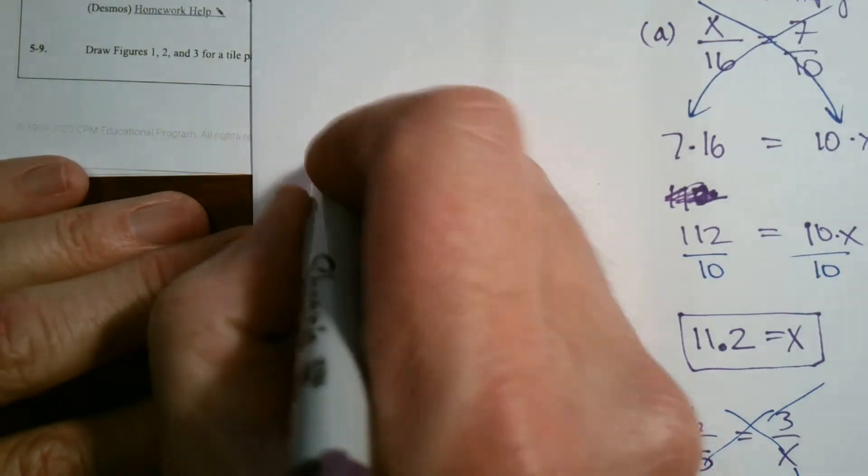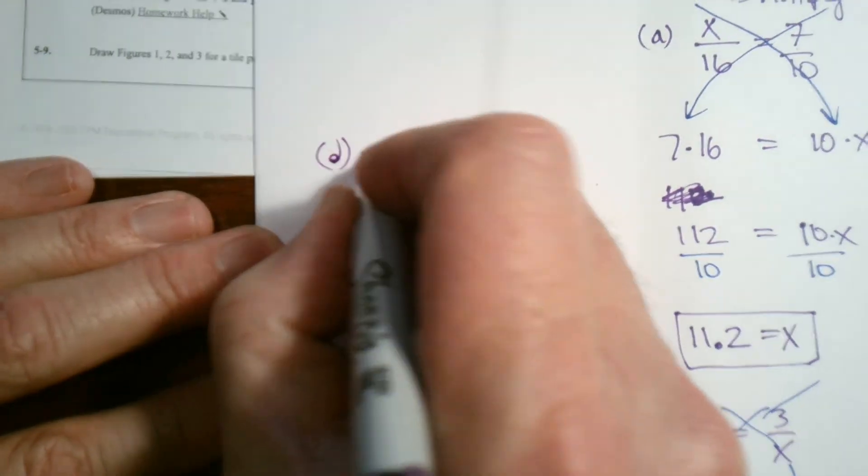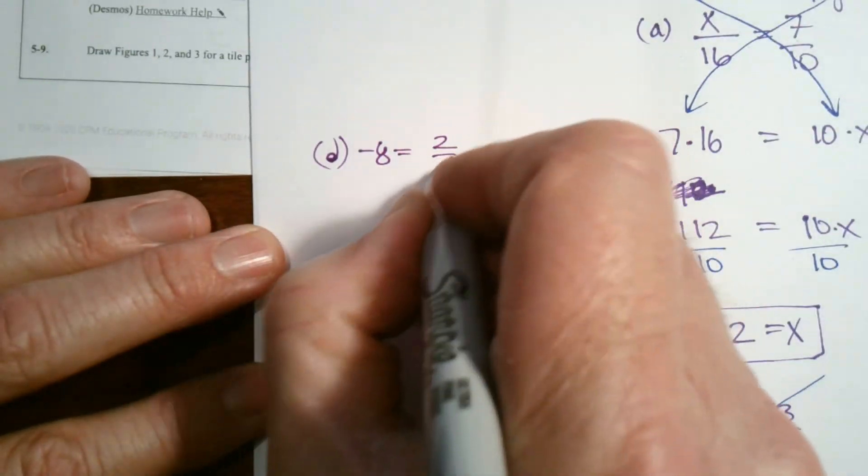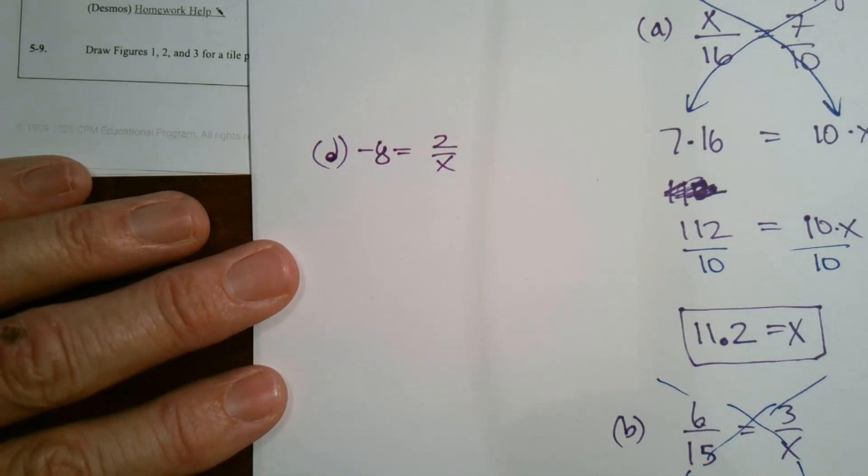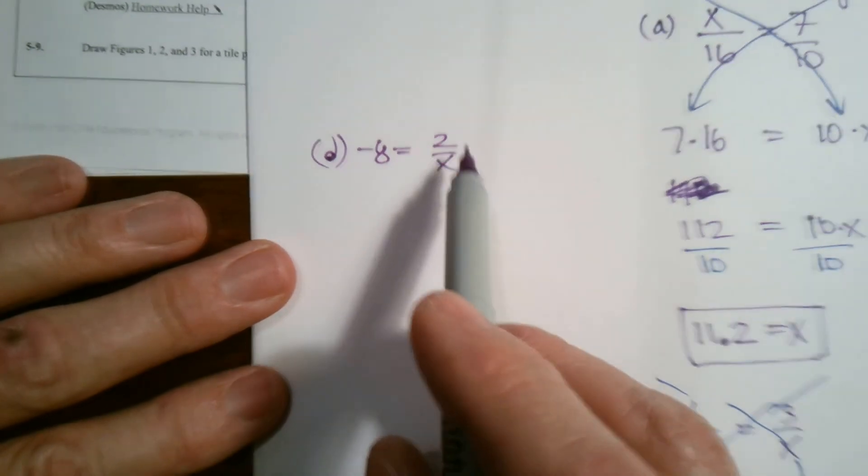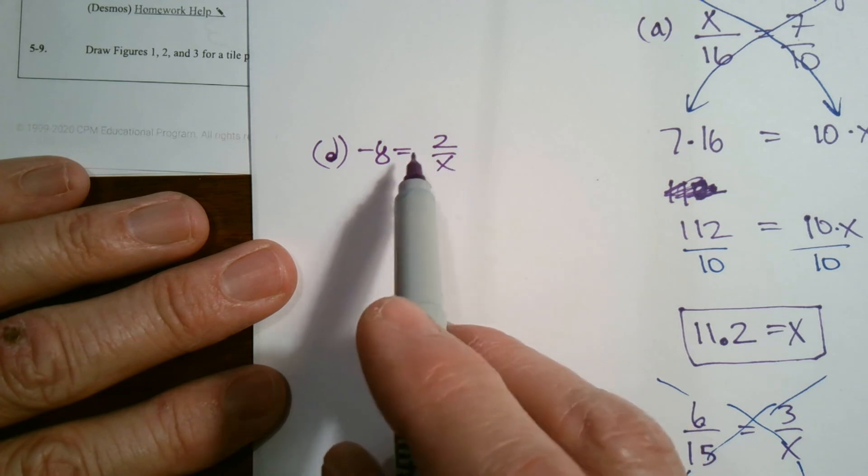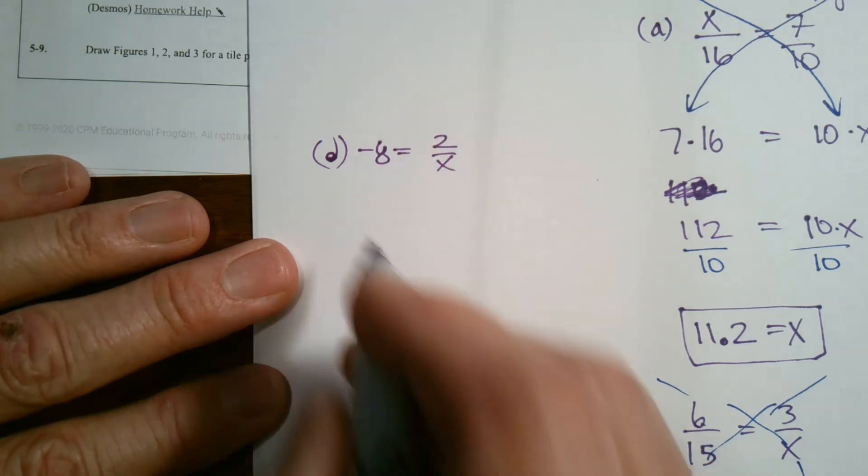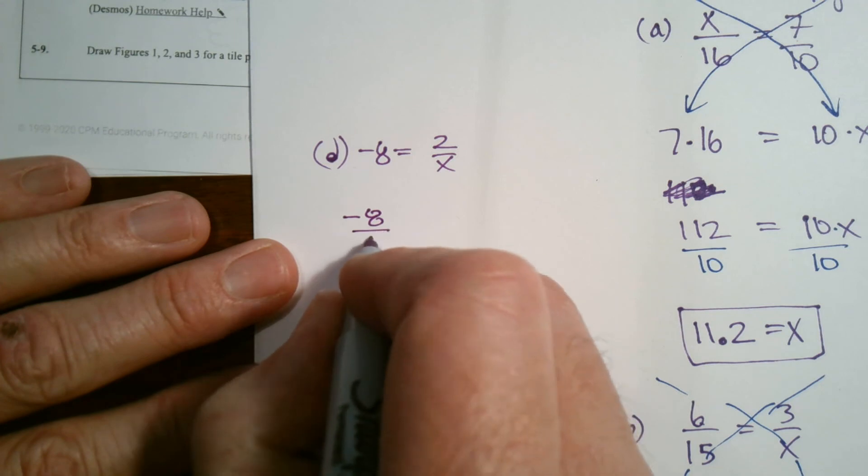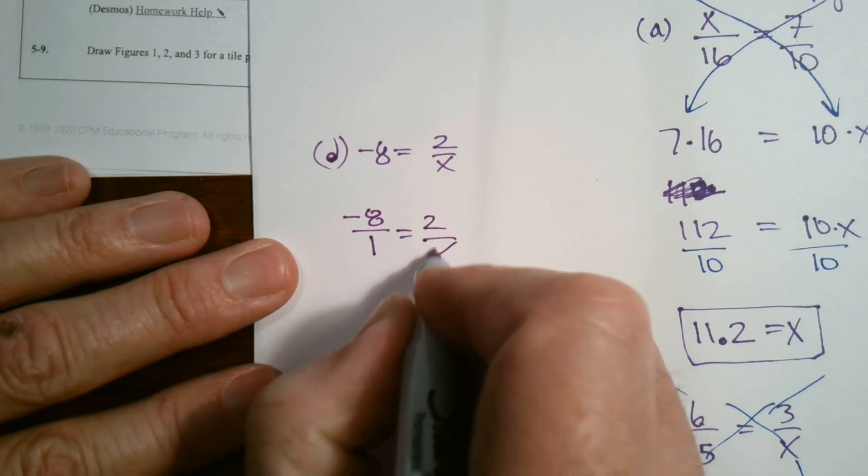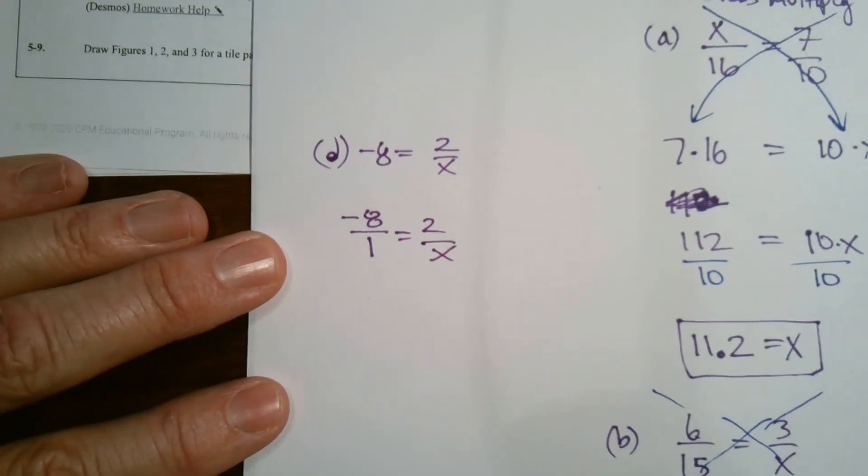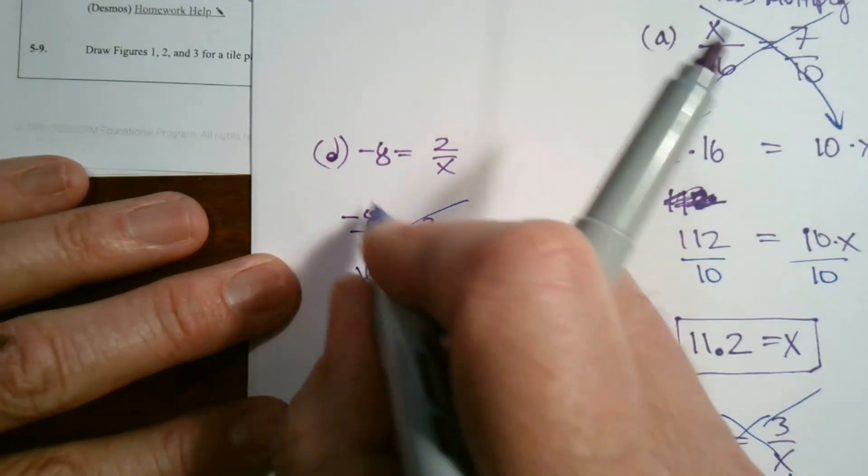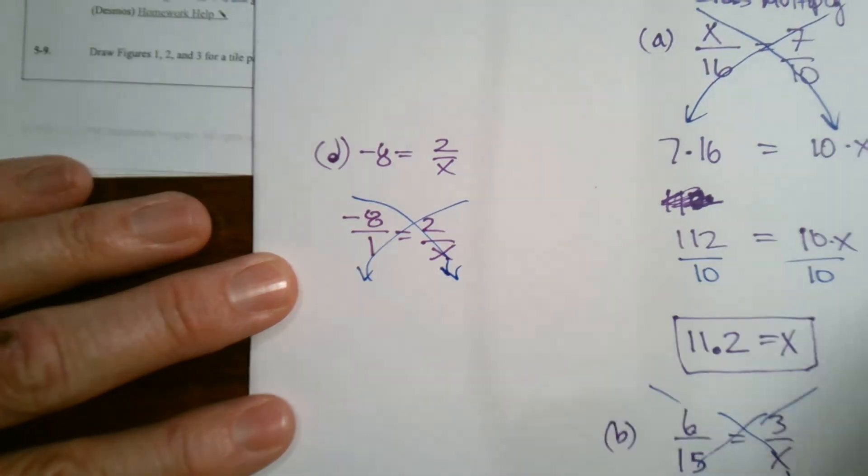Let's do the last one just for the sake of finishing this out. And that's D. D is negative eight is equal to two over X. Okay. In this case, right now you don't have a fraction equal to fraction, but I have a fraction on this side. I can make that a fraction. I could just change that to be negative eight over one is equal to two over X. And then I can, at that point, I'll just go ahead and use cross multiplying.